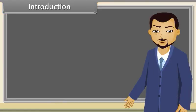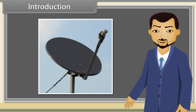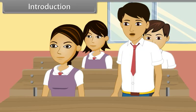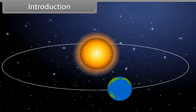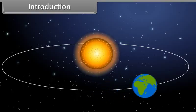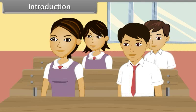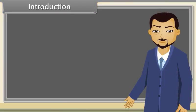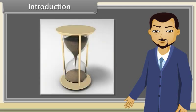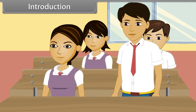How many of you have dish TV at your home? Do you know what kind of shape it has? Yes, it is parabolic in shape. Do you know what kind of path Earth follows while revolving around the sun? Yes, it is elliptical in shape. So finally, who will tell me what kind of shape this object has? It has a hyperbolic shape.